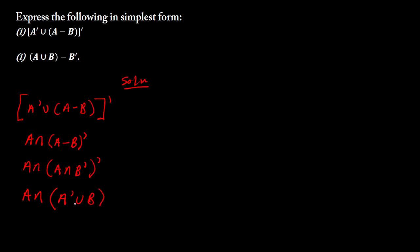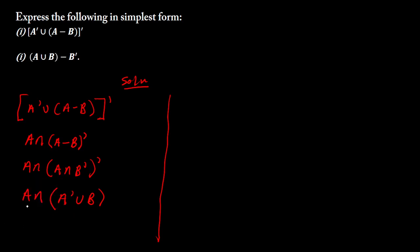So this is what we currently have. Once we have that we can move on and use the distributive law. Using the distributive law we are going to say: open bracket A intersection A complement, close bracket, and then we also have open bracket A intersection B.